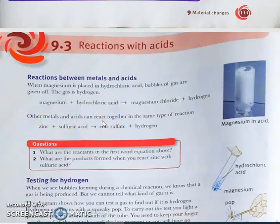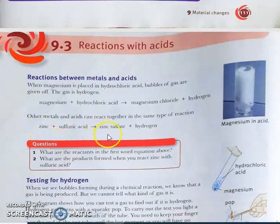Other metals and acids can react in the same way — for example, zinc plus sulfuric acid. The zinc displaces hydrogen gas. The general equation is: metal + acid → salt + hydrogen.